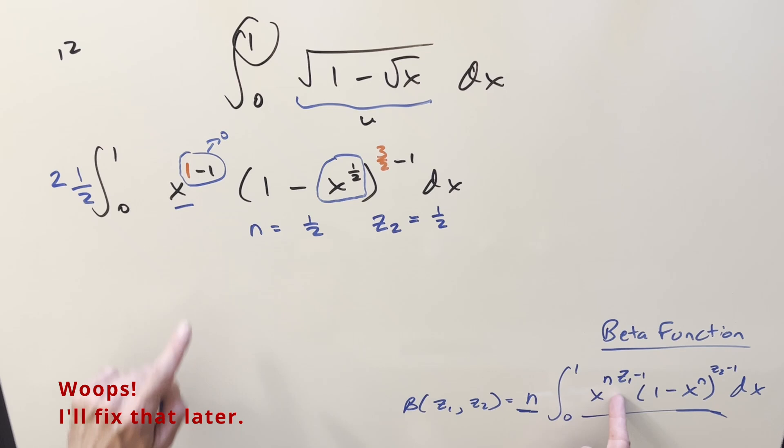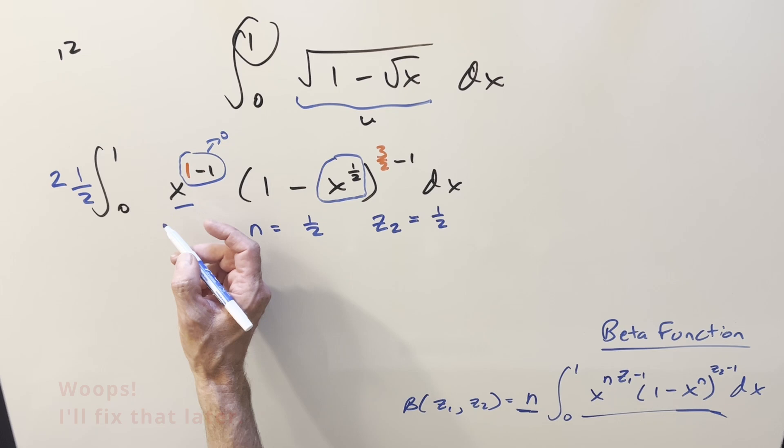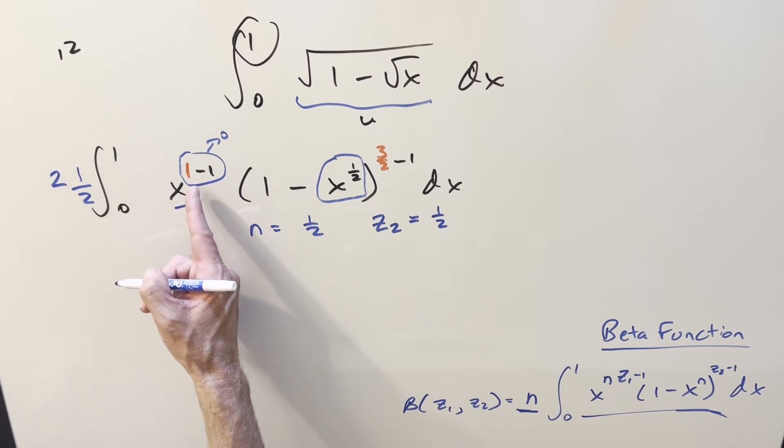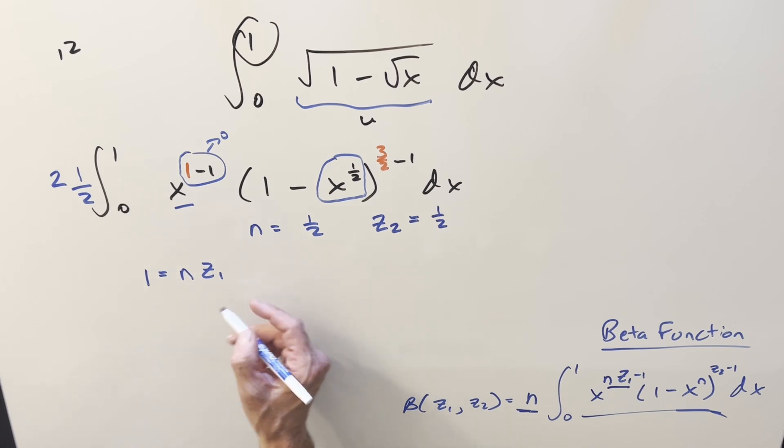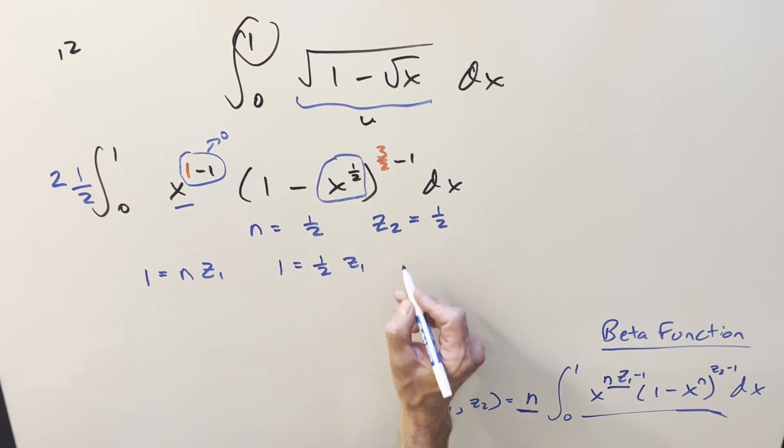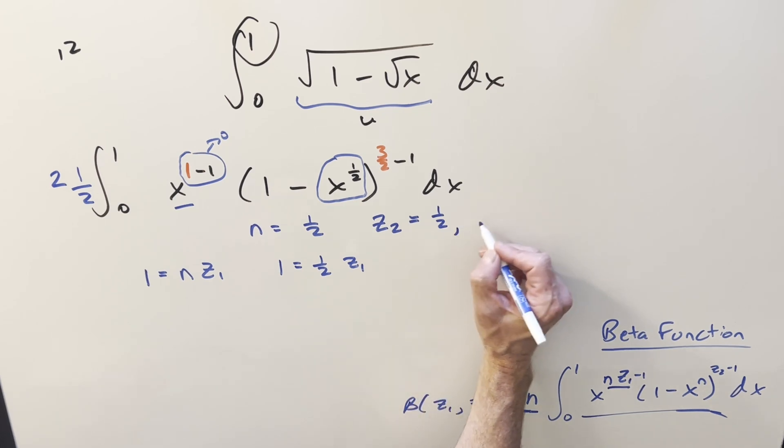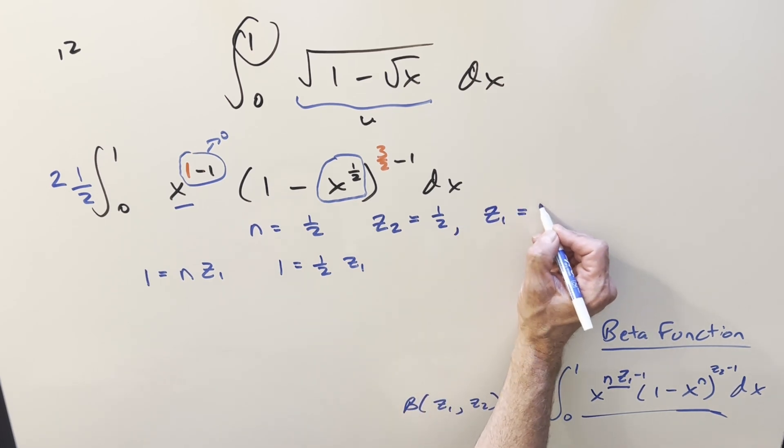The only thing we don't have is this z1. So we kind of created a little equation right here. So from this, it's a little confusing. We subtract it off 1, so we're saying this red 1 is equal to this part. So that red 1 is equal to n z1. But we know what the n is. That's just 1 half. So we're saying 1 equal to half z1. Solve for that. So then the z1 value is just going to be 2.